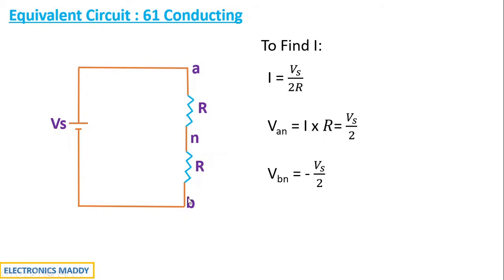One important point: why is Vbn equal to minus Vs by 2? If we find Vnb it would be plus Vs by 2, but since we are finding it with respect to the negative terminal, Vbn equals minus Vs by 2. For Vcn, since phase C is not connected to the supply, the output voltage Vcn equals 0. So we have Van = Vs/2, Vbn = -Vs/2, and Vcn = 0.